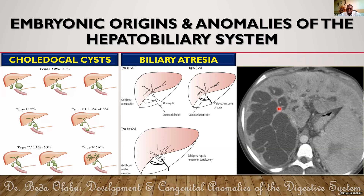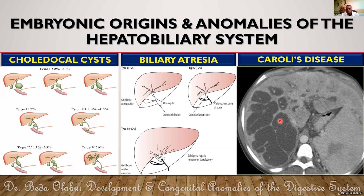A third important condition is Caroli's disease, one of what we call ductoplate malformations. It involves cystic dilatations of the biliary tree within the liver, affecting the intrahepatic bile ducts. It is characterized by the cysts having a central blood vessel — seen as central dots in imaging. This is more of a postgraduate topic, but choledochal cysts and biliary atresia are expected knowledge for undergraduates.